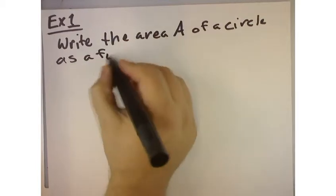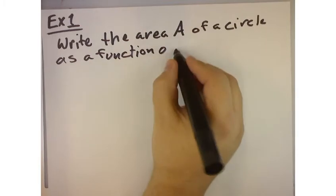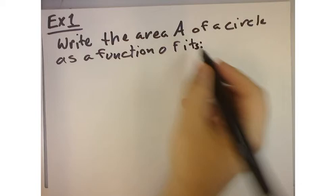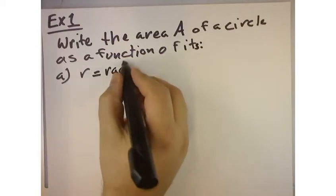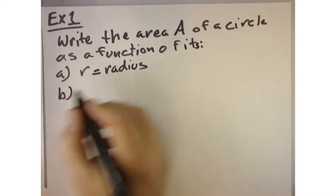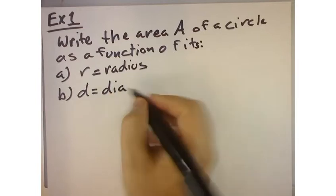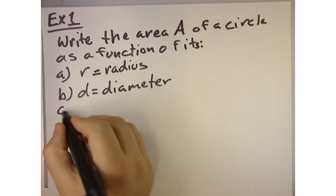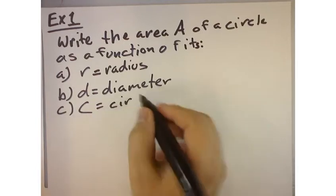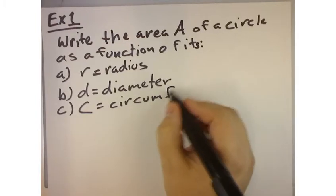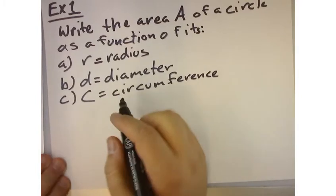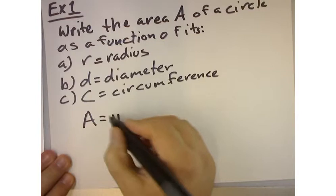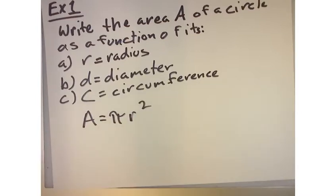As a function of its, they want us to write it in terms of its radius r. B, its diameter. And C, its circumference. So, the way that we do this is we know that the area of a circle is equal to pi times the radius squared. So basically what we've got to do is solve for the following variables based on what they ask us to do.